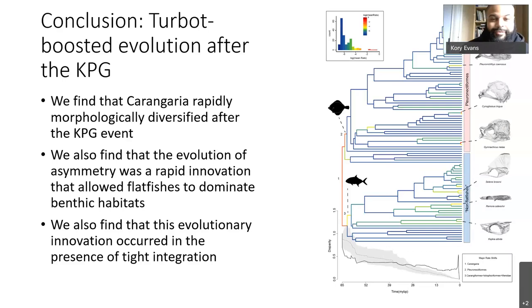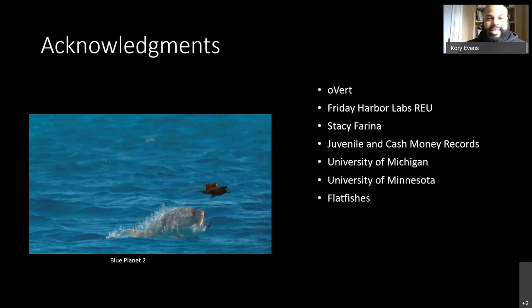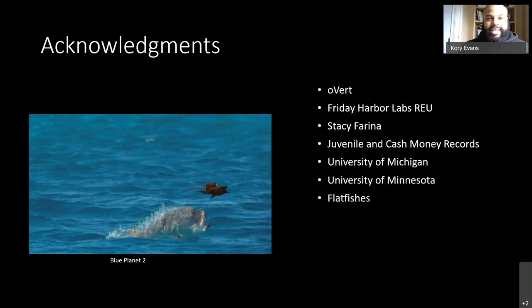To conclude: we found that Carangarians rapidly morphologically diversified after the end-Cretaceous extinction event — the meteor strikes, dinosaurs die, flatfishes celebrate. We also found that the evolution of asymmetry was a very rapid innovation that occurred in the presence of very strong integration across the skull. We believe this integration is a reflection of the developmental integration that these flatfishes exhibit while they're growing. And with that, I'll take any questions.